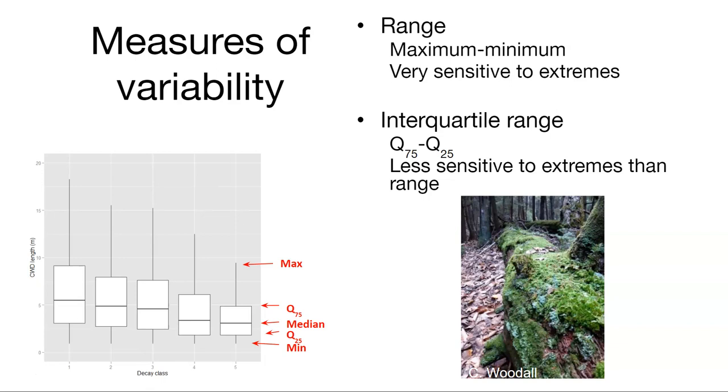And so one way that we might measure the variability here is just to take the range. What about the maximum value minus the minimum value? That could be one way to represent the variability. As it turns out, it tends to be sensitive to the extremes.